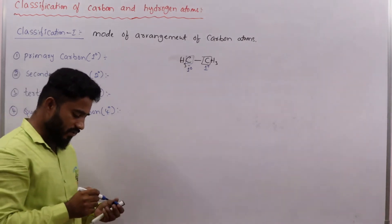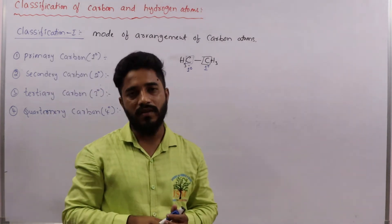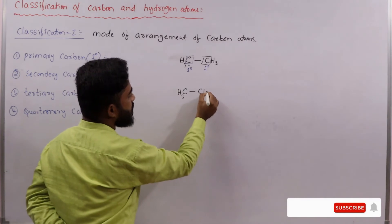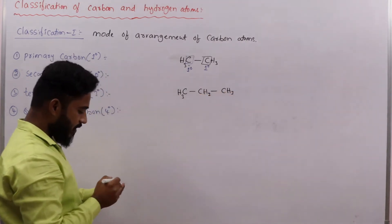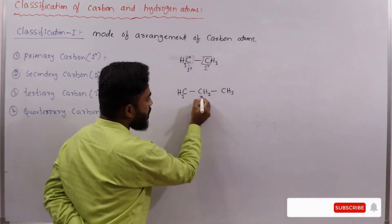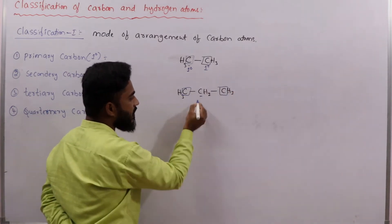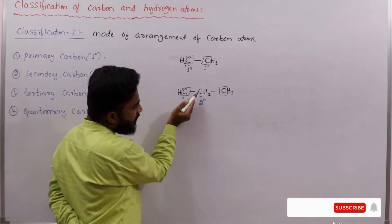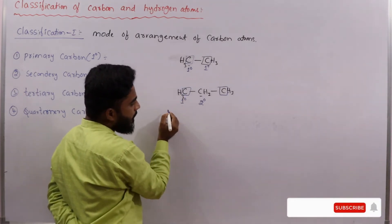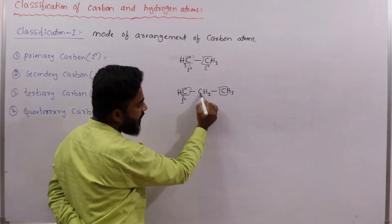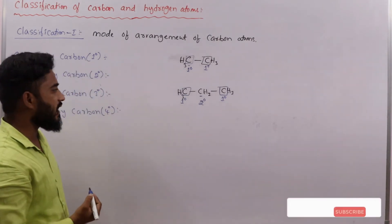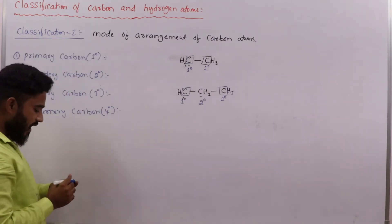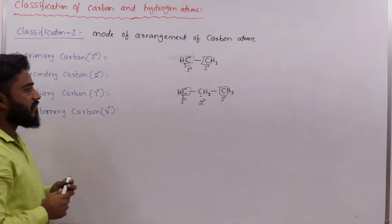Secondary carbon means if a carbon is bonded to two other carbons, it is said to be secondary carbon. For example, in CH3-CH2-CH3, the middle carbon is bonded to two other carbons on the left and right, so that carbon is said to be secondary carbon. The end carbons are each bonded to only one carbon, so they are primary carbons.